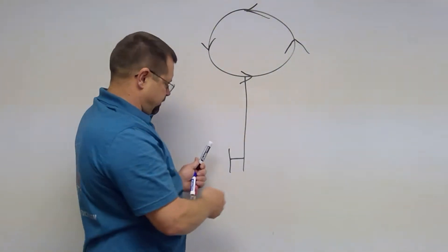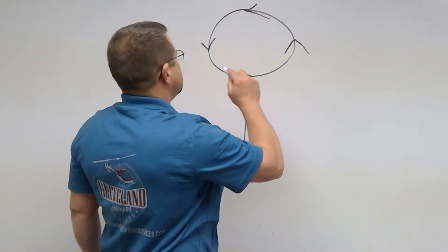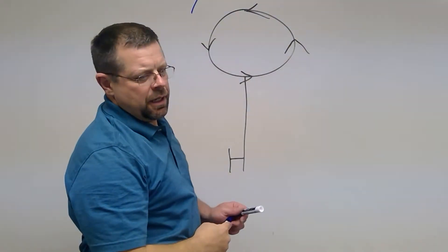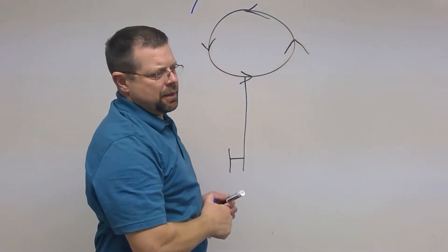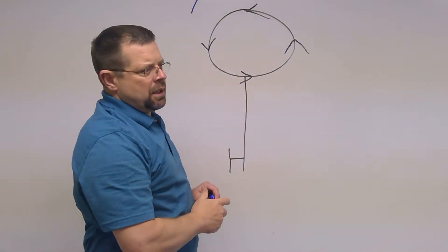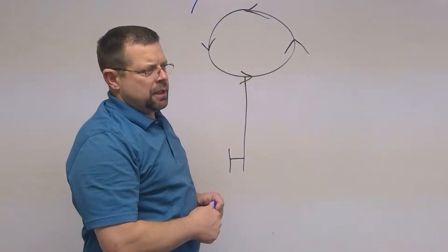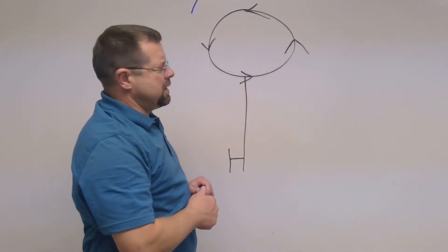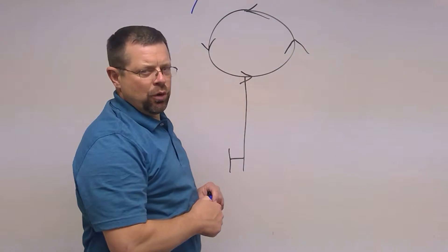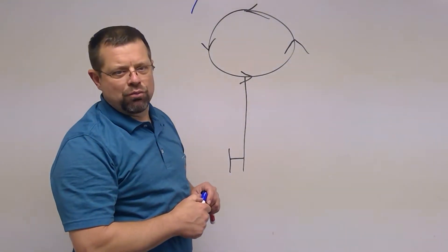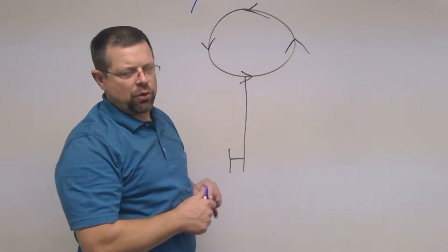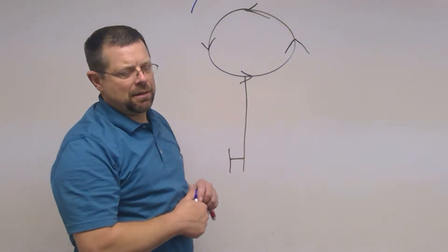If you lose your tail rotor, the helicopter is going to yaw to the right. If you have no forward speed it's going to do more than yaw — it's going to start to spin out of control. This is similar to loss of tail rotor effectiveness, except in this case you will have some clue that you have a mechanical failure. The clue will be abnormal noise, vibration, or suddenly the helicopter yawing to the right and spinning despite left pedal input.